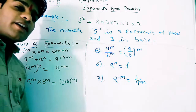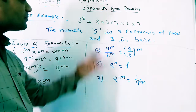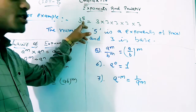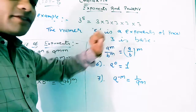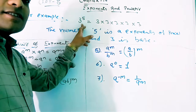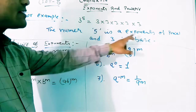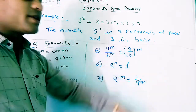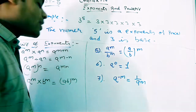In second class you have already read about exponents and powers. For example, 3 raised to the power 5 means the product of 3 multiplied 5 times. Here, 3 is the base and 5 is the exponent or power. This is called base and this is the power or exponent.